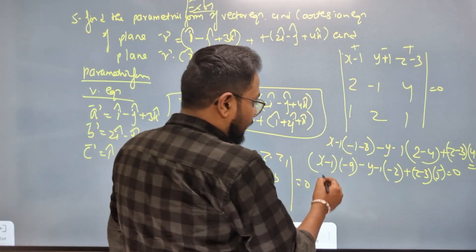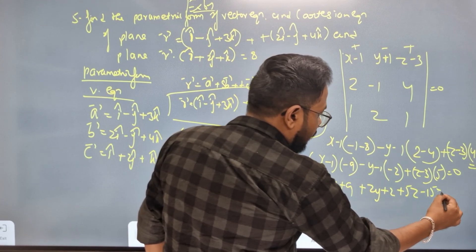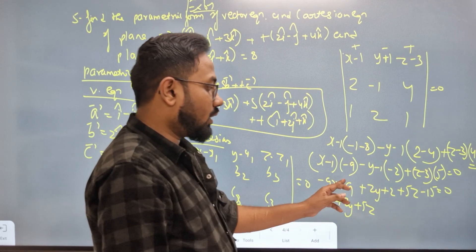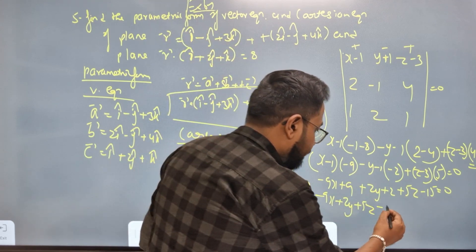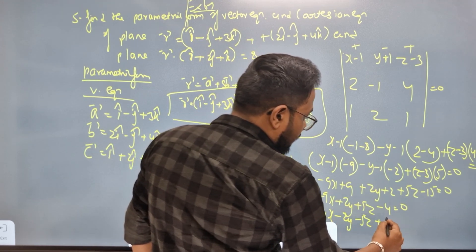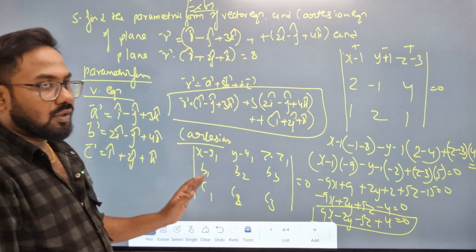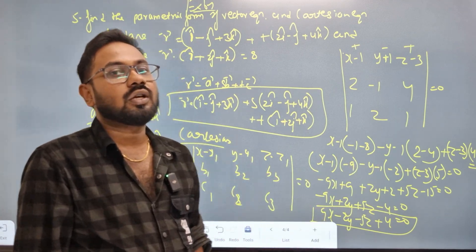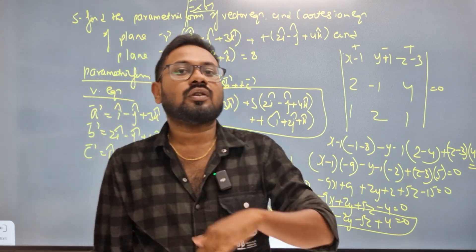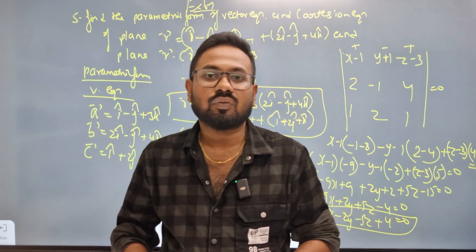Simplifying: minus 9x + 9 plus 2y + 2 plus 5z minus 15 equals 0, giving minus 9x + 2y + 5z minus 4 equals 0. That's it — we can do this using the determinant method and this formula. Please like and share the video. Thank you, share and subscribe.